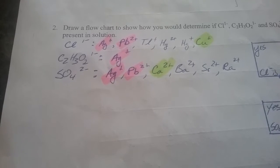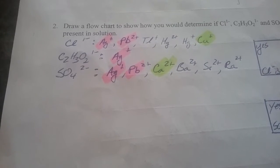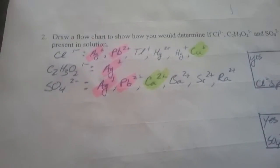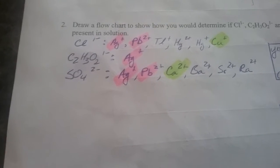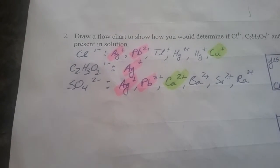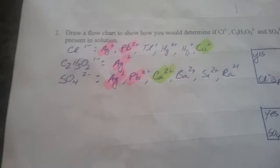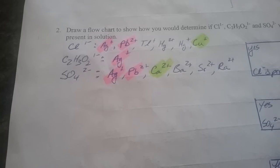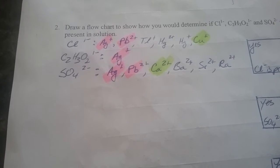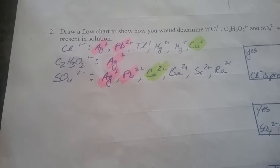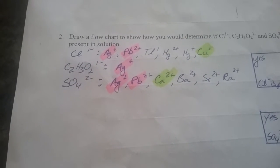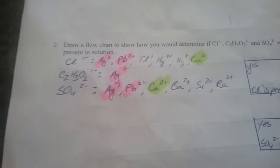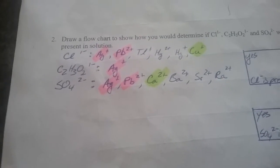Here we are for the second example of sequential chemical analysis. This time we're going to be looking at the anions, trying to precipitate out specific anions. To do this we're going to have to use cations, whereas in the first example we were trying to precipitate out cations using anions.